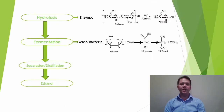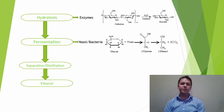Following extraction, cellulose and hemicellulose go through hydrolysis catalyzed by enzymes. The resulting sugars are then fermented by mixing with yeast and bacteria, and the resulting ethanol is separated with distillation.